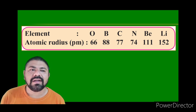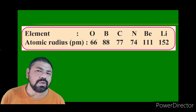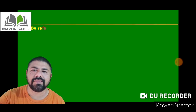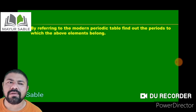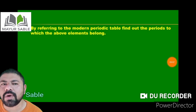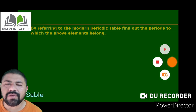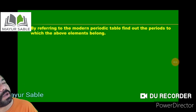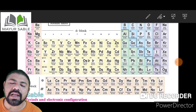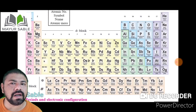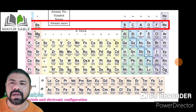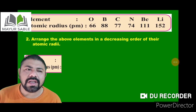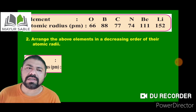The first question in the activity asks: by referring to the modern periodic table, find out which period these elements belong to. When we look at the modern periodic table, we can see that all those elements belong to period number two.